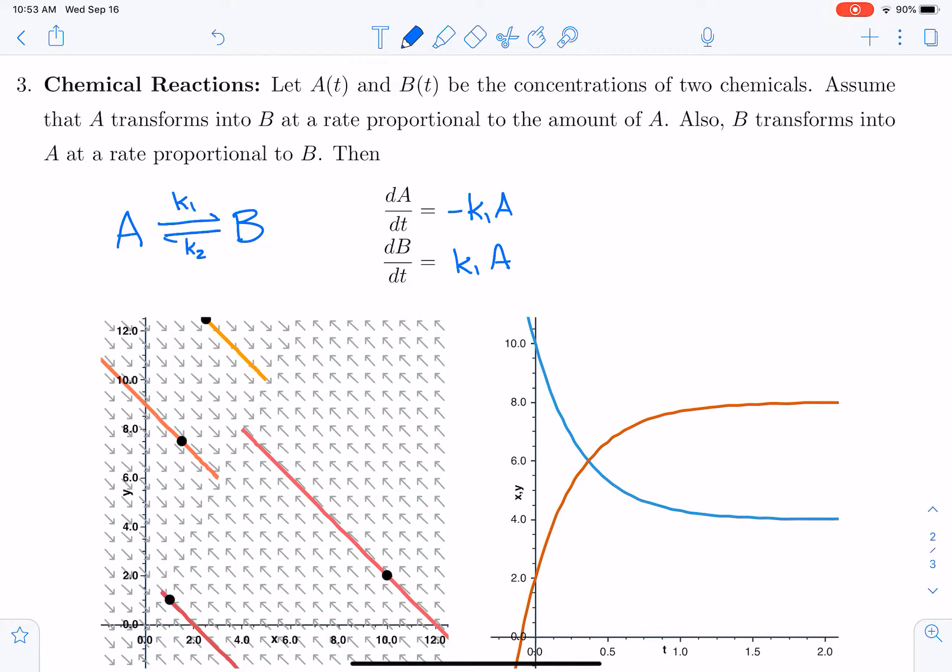On the flip side, we have that B transforms into A at a rate proportional to B, so we gain k2 times B in the dA/dt equation, but then lose k2 times B in the dB/dt equation. And that gives us a system of differential equations that describes A and B during this reaction.